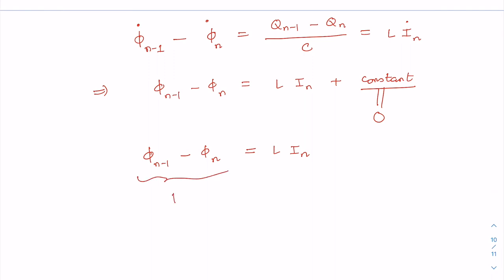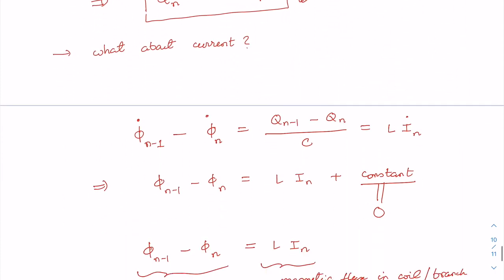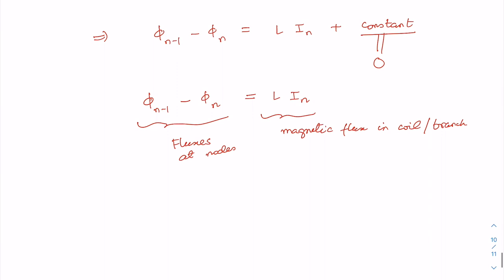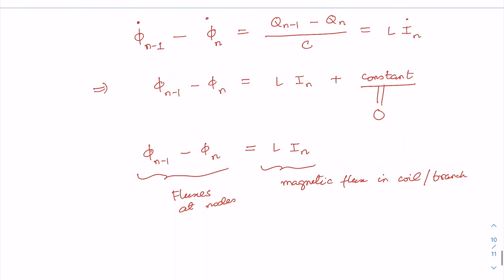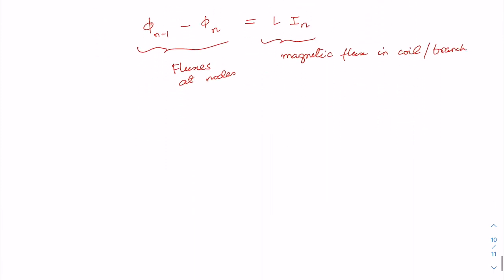So phi_{n-1} minus phi_n equals L times i_n — the difference of magnetic fluxes at the nodes equals L times the current i_n, which is the magnetic flux in the inductor branch. Therefore we can obtain the current just by taking the difference of magnetic fluxes, while we can get the charge by taking the time derivative of the flux. Now we can write down the Lagrangian for the full transmission line.